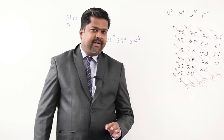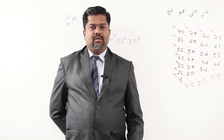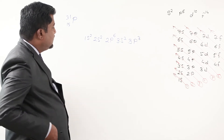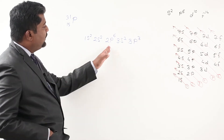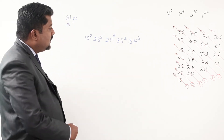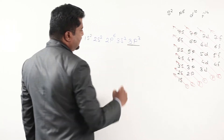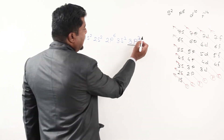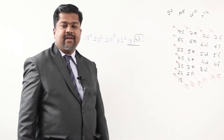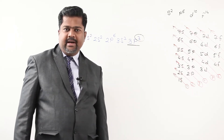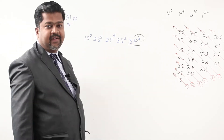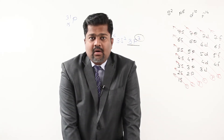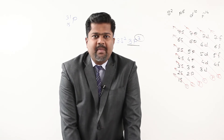Keep in mind: when the p orbital is the last orbital and it is incompletely filled — that is, it is not fully filled with 6 electrons — then this principle is applied. This principle is called p orbital splitting, or more correctly Hund's rule of maximum multiplicity. The rule says electrons try to remain unpaired as far as possible when degenerate orbitals are available.